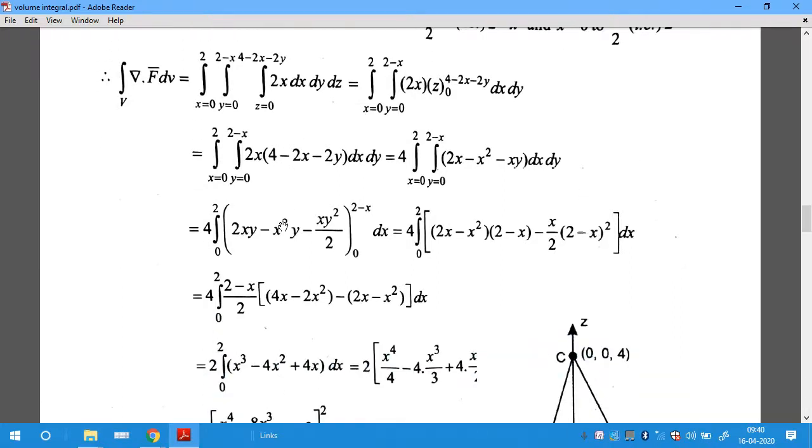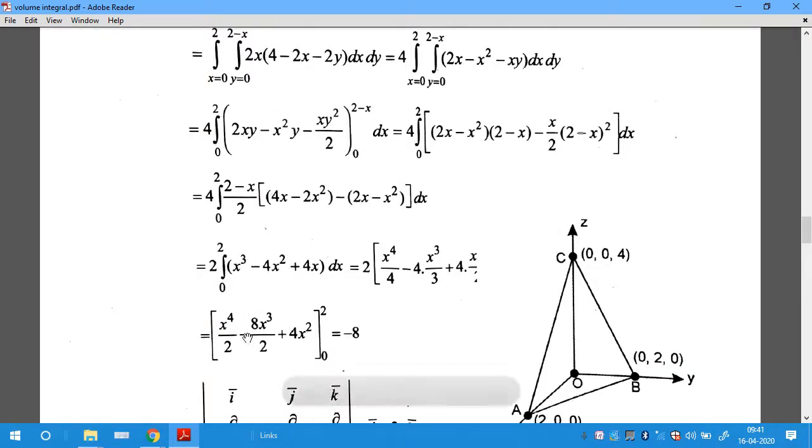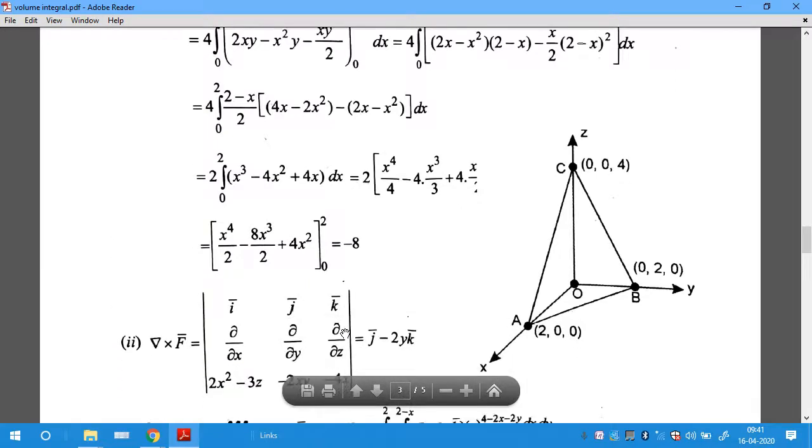As in multiple integrals, evaluate first with respect to z, then y, then x. While integrating with respect to z, keep x and y constant; while integrating with respect to y, keep x constant. The integration gives: x⁴/4 - 4x² - 8x³/3 + 4x²/2, yielding a result of -8.